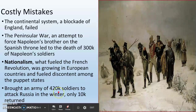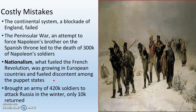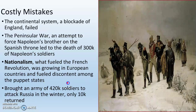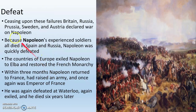And finally, Napoleon brings an army of approximately 420,000 soldiers into Russia during the winter, and only 10,000 return. This is a painting of some of his soldiers returning. This is ultimately the thing that leads to Napoleon's downfall. He loses so much of his army in Spain and Russia, and combined with nationalism, all of the countries of Europe rise up against him and establish their own governments. Seizing upon these failures, Britain, Russia, Prussia, Sweden, and Austria all come together and declare war on Napoleon. Because all of Napoleon's most experienced soldiers had died in Spain and Russia, Napoleon is defeated.